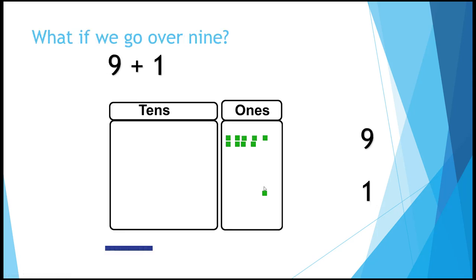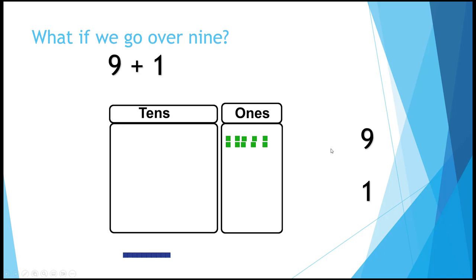What if we go over 9? 9 plus 1 is 10. We need to trade those 10 ones for 1 ten. Same value. We need to put the 1 digit in the tens place. That's what it stands for.